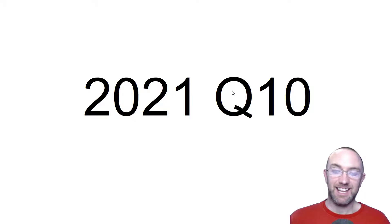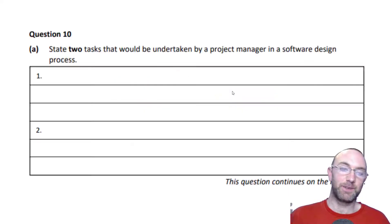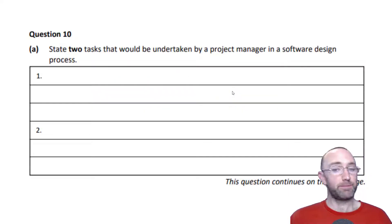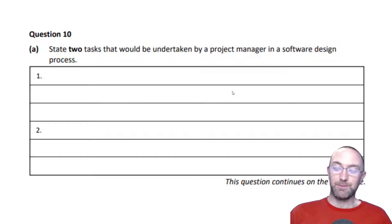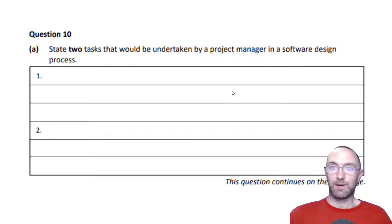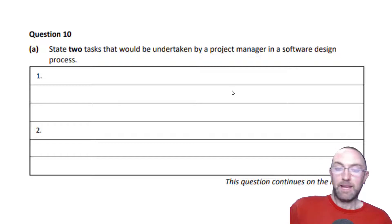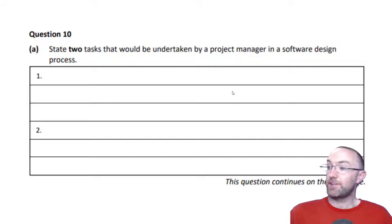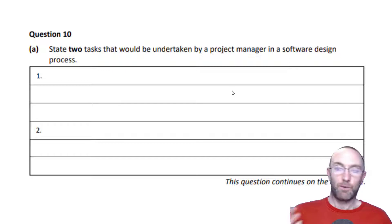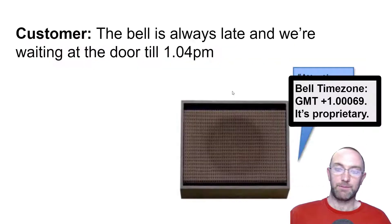2021 question 10 is asking what two tasks would be undertaken by a project manager in a software design process. The easiest way to do it is just to think of you and two of your buddies making a project in school - who's in charge of what, what's there to be done.